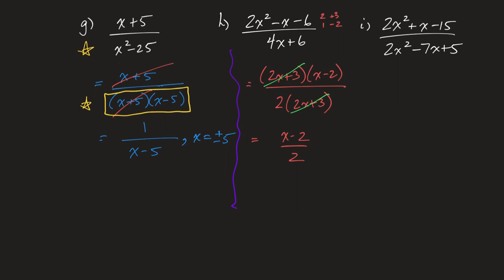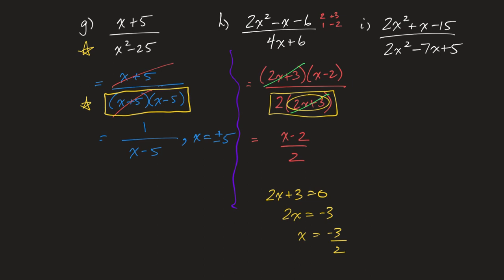If we walked away from the problem now I would be concerned that we're not putting enough focus on restrictions. If you said there are no restrictions because I just have a two on the bottom, I would be very concerned. We look back at our first factored form and I notice that bracket gives me my restriction. Setting that bracket equal to zero and solving — most of us can do that mentally — we tack on the restriction that x cannot equal negative three halves. Now we have a correct statement.